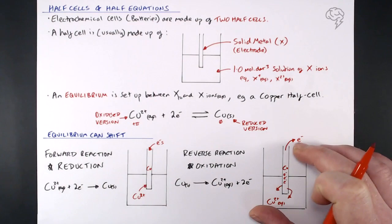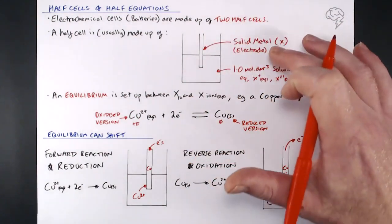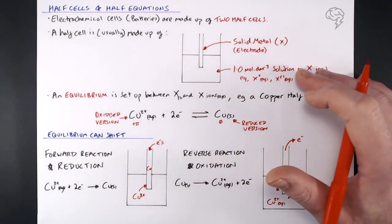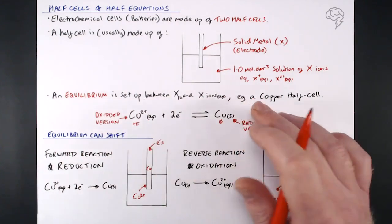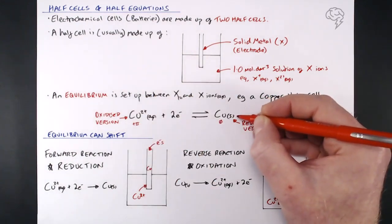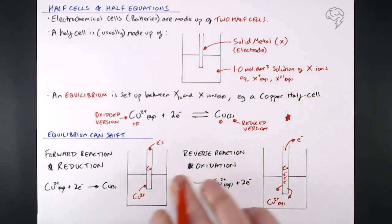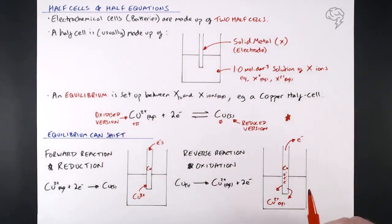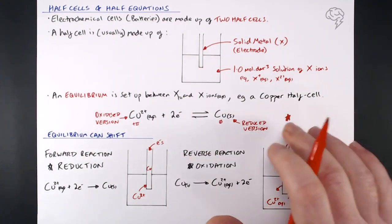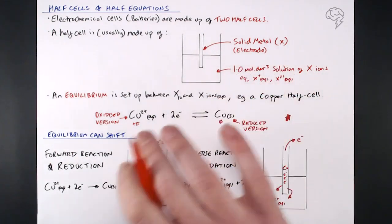So: reduction happening in one, oxidation happening in the other. The overall key messages are: nine times out of ten we have a solid metal and its ion in solution; we set up an equilibrium; we always write half equations with the oxidized version on the left and the reduced version on the right; the forward reaction is reduction and the backward reaction is oxidation — and either can happen depending on what other half cell you attach these to. We'll be moving on to talk about full cells and balancing these reactions. Half cells and half equations are the fundamental basis of all electrochemistry.